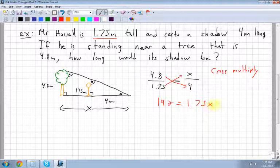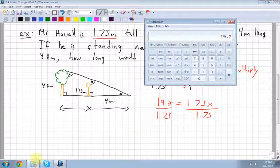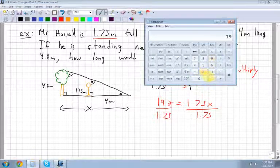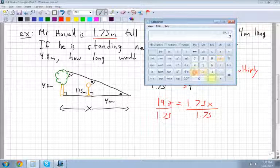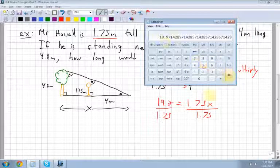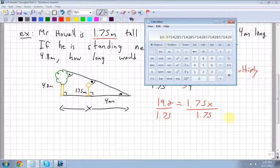And I divide by the value that's in front of the variable. 1.75 divided by 1.75. So I get 19.2 divided by 1.75, which is equal to 10.97.